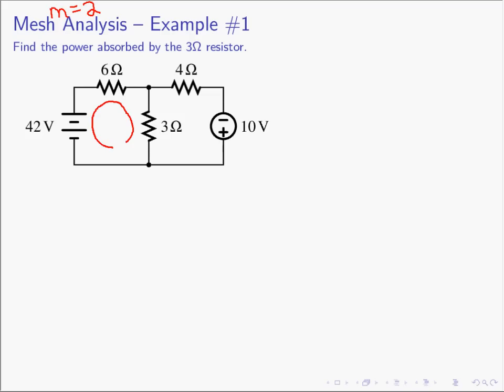Step two: define the mesh currents consistently. We define a current going around this way and call it I1, and the current in the second mesh we call I2. By consistently, notice that both mesh currents go the same direction — in this case, clockwise. If you make the first mesh current clockwise, all of the mesh currents need to be clockwise. I always use clockwise — always make your mesh currents go the exact same direction. If you don't, things are not going to work out.